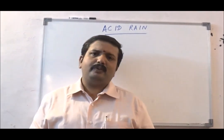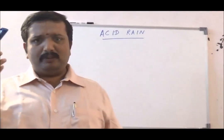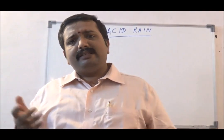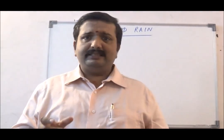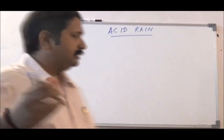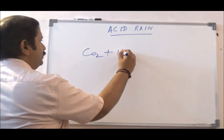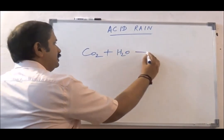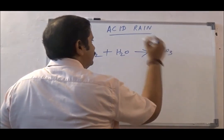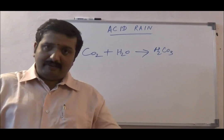How does this happen? Naturally, whenever rainfall falls into the ground from the atmosphere, you have some amount of acid. This is basically carbonic acid. It forms from carbon dioxide plus water in the atmosphere coming down as rain, forming carbonic acid.